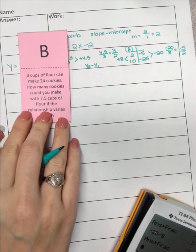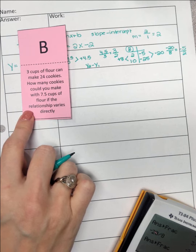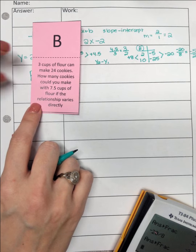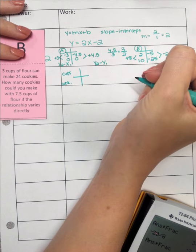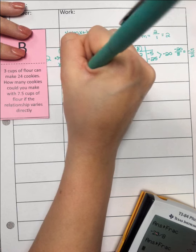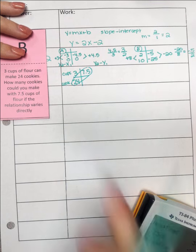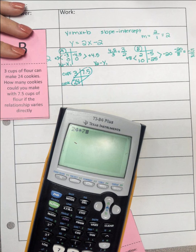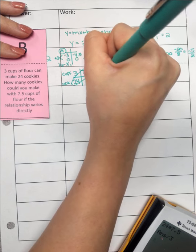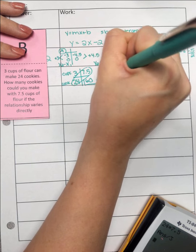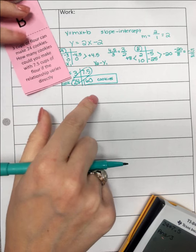Okay, here. 3 cups of flour can make 24 cookies. How many cookies could you make with 7.5 cups of flour if the relationship varies directly? So this is direct variation or proportional. That means I can set up a proportion. So we've got cups and cookies. 3 cups can make 24 cookies, and they're also giving me 7.5 cups. So I'm going to cross multiply. I'm going to take 24 times 7.5 and then divide by that 3. So 60. It could make 60 cookies. And that just makes sense. If 3 makes 24, 7.5, that's more than double, so it should be more than double 24. And yes, 60 is more than double.